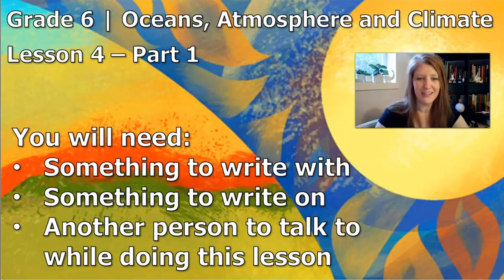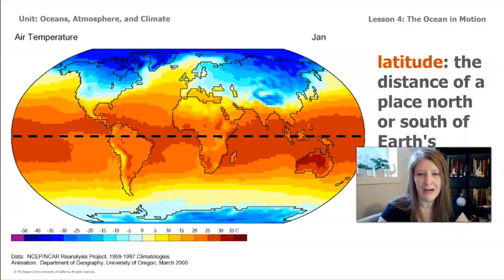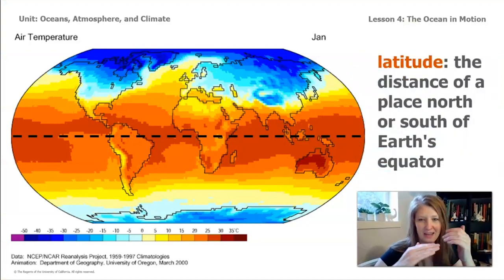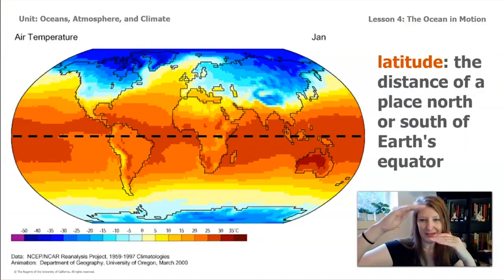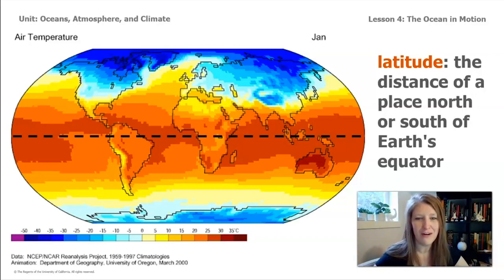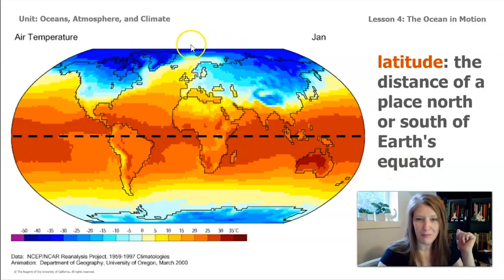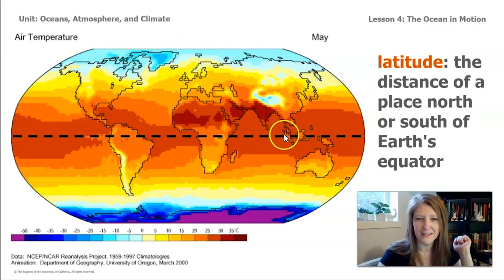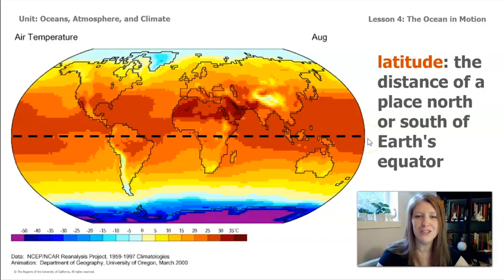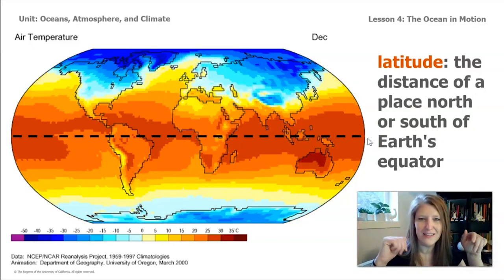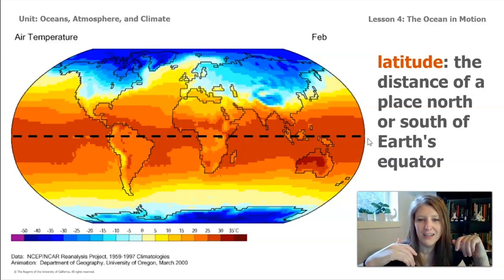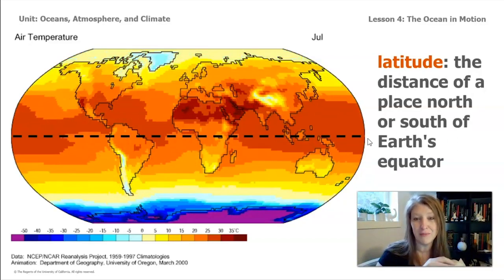Okay, let's get started. One of the things we learned in the last lesson was about how the word latitude means the distance from the equator. If you are far from the equator, you have a high latitude — that would be up at the North Pole or down at the South Pole. In this picture you can see the colors changing, showing temperature across different parts of the planet over the course of a year.